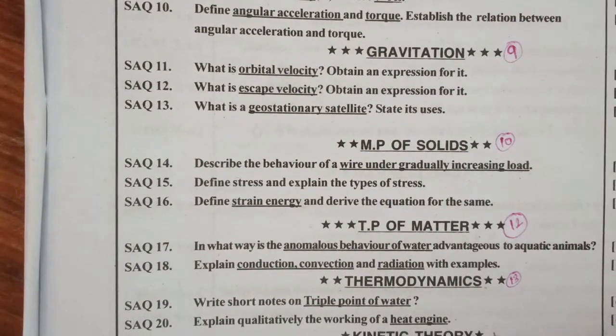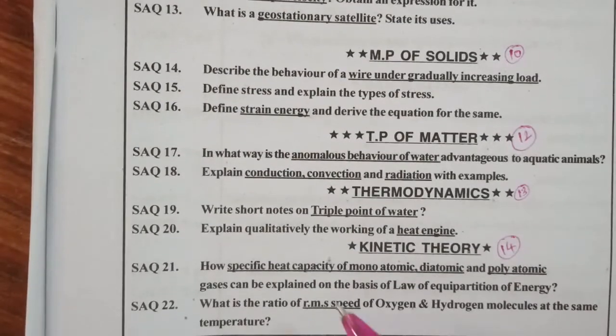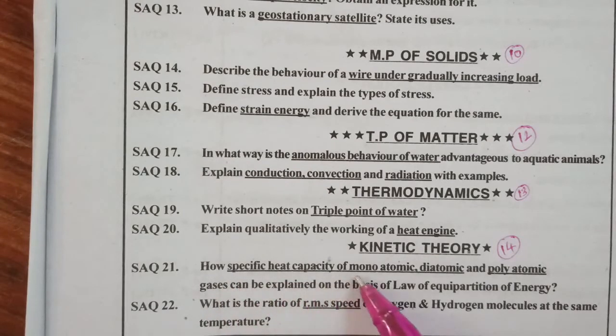Next, kinetic theory. In 4 marks there is not much opportunity. Fourteen chapter. How specific heat capacity of monoatomic, diatomic and polyatomic molecules are very important, asked a number of times.